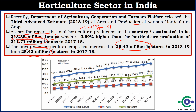You can see that since 2004-05 the production has been increasing gradually. Every year the production is increasing for horticulture crops, for fruits and for vegetables as well. This is the achievement for India in the horticulture sector — we are growing continuously.